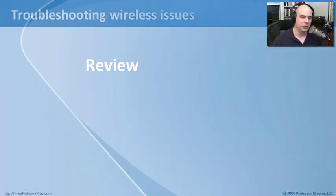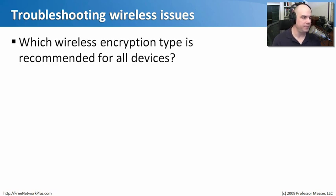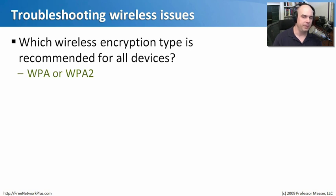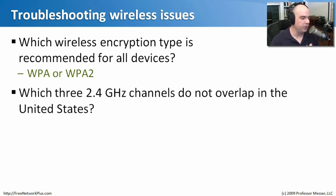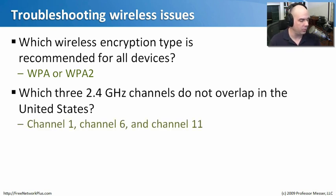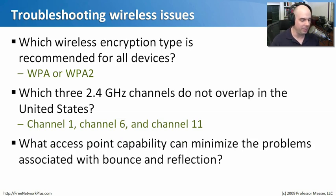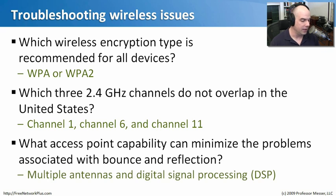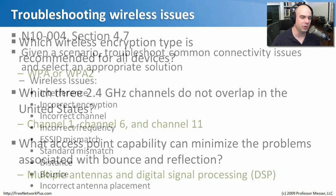Let's review what we've learned. Which wireless encryption type is recommended for all devices? The one you don't want to use is WEP; the one you do want is WPA or WPA2. Which three 2.4 GHz channels do not overlap in the United States? Channels 1, 6, and 11. What access point capability can minimize problems associated with bounce and reflection? Multiple antennas and digital signal processing — which helps a lot when bouncing signals occur throughout your facility.